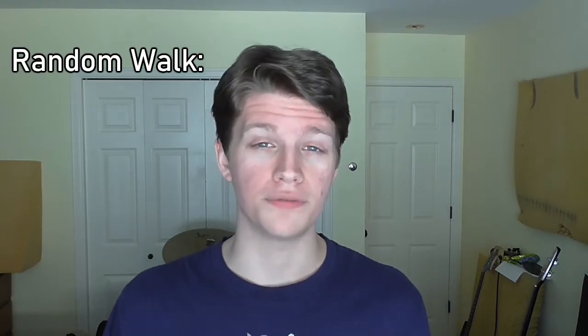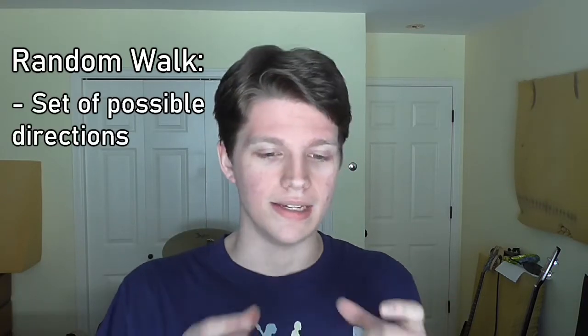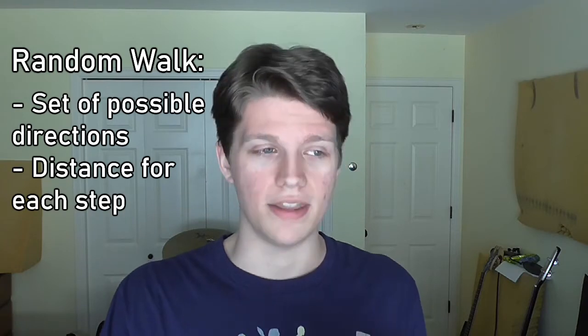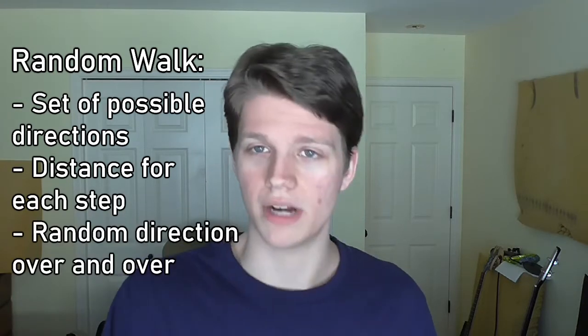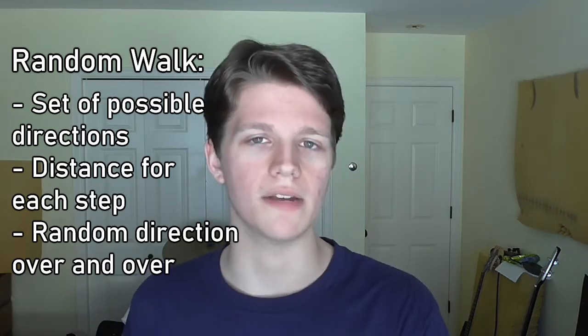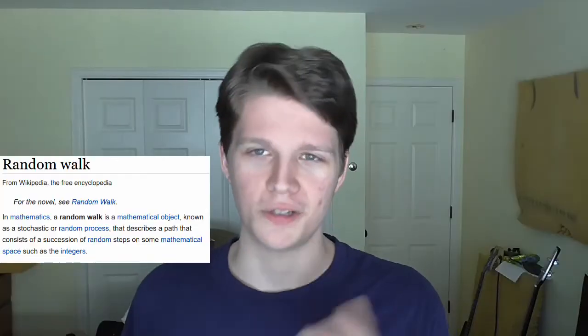Basically, a random walk is achieved by defining a set of possible directions and a distance for each step, and then taking a step of that distance in a random direction over and over again. In two dimensions, the vanilla random walk looks like this. The technical math definition is a lot more complicated because it's a lot more general, but that's the gist and that's all we need here.